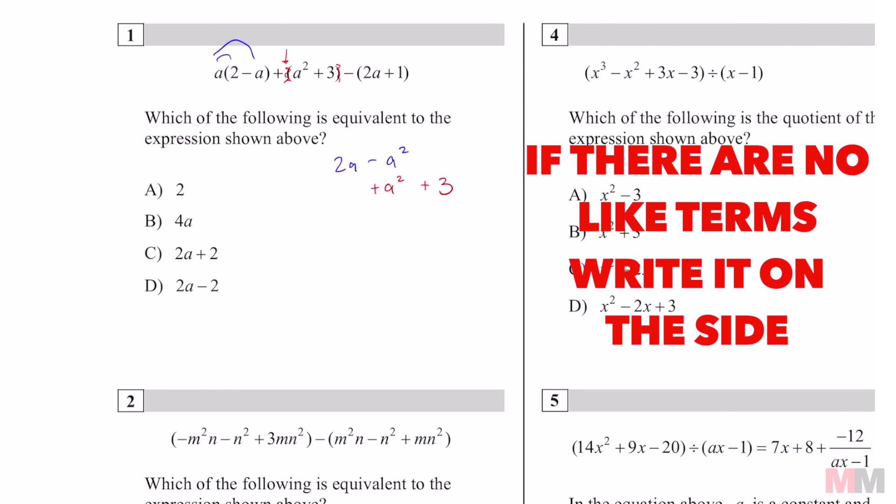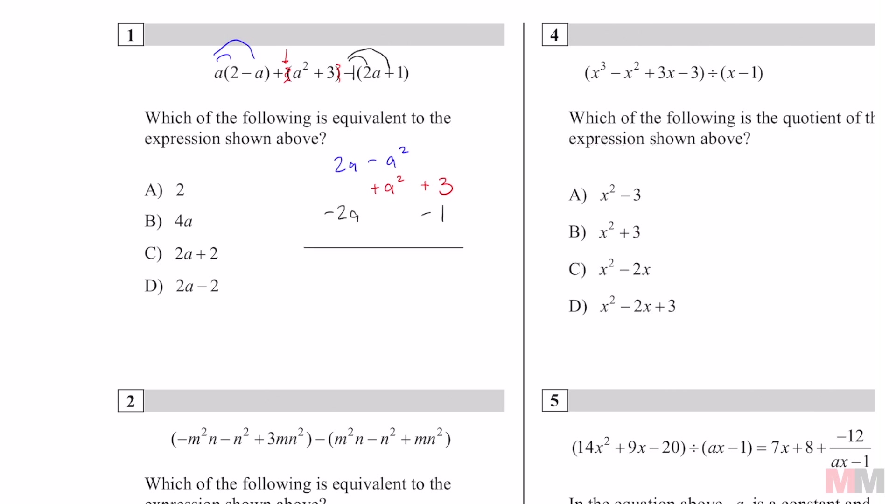For the last one you put negative 1 in front and distribute the negative. So from here 2 minus 2a those cancel out. So that's gone. Negative a squared plus a squared cancels out. Look how easy that is. I'm giving you the best strategy to combine like terms. 3 minus 1 you get 2. The answer for that is a. Let's move on.